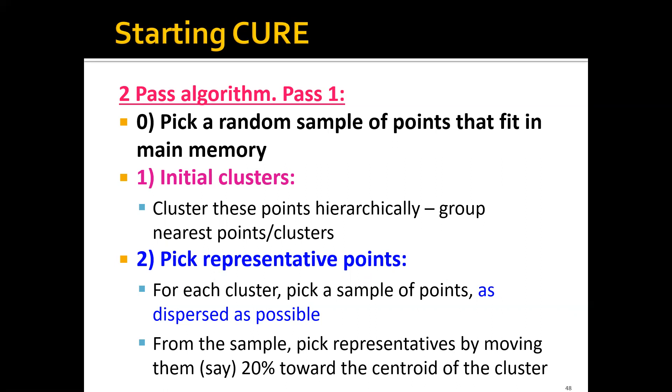Then we pick the representative points. For each cluster, we pick a sample of points that are as dispersed as possible. For example, we randomly pick the first point, then pick the second point that is as far away as possible from the first point. Then we pick the third point that's as far away from the first two points as possible, and the process goes on.